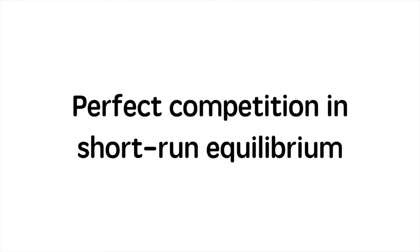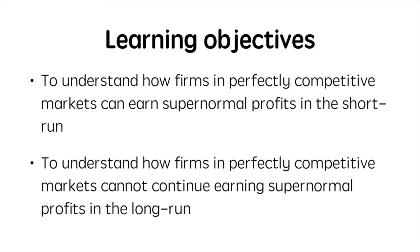In this video we'll look at the perfectly competitive firm in short run equilibrium earning supernormal profits. We'll first see how firms in perfectly competitive markets can earn supernormal profits and seek to understand why they cannot maintain those supernormal profits in the long run. While watching this video you should try to follow along with my drawing step by step so you can become more confident in drawing the diagram for perfect competition and better understand it.